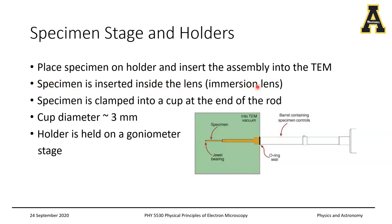Typically the sample holder looks something like this. You have a barrel — as a user you hold this end of the sample holder and gently push it into the electron column. This is typically the arrangement for a side entry holder. You have the specimen sitting at the tip of the holder itself, a mechanical part called the jewel bearing, and a cup which holds the specimen. The specimen is typically on a copper grid, or if it's a thin film sample then you have special holders for mounting it.